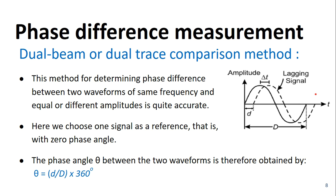The dual beam or dual trace comparison method is a quite accurate method to determine the phase difference between two waveforms of the same frequency, and nearly equal or different apertures. As shown in the figure, we can see two waveforms on the screen of a CRO — one is leading and another one is lagging. We choose one signal as a reference, that is the signal with zero angle, and we measure the phase difference between the two signals.